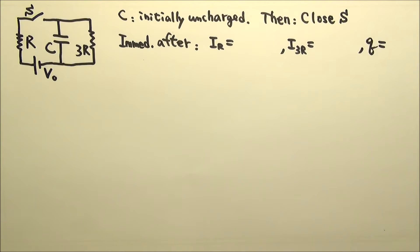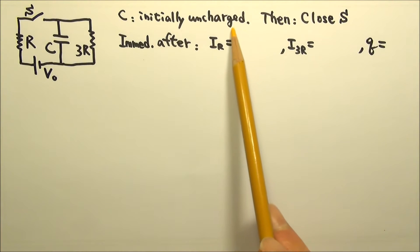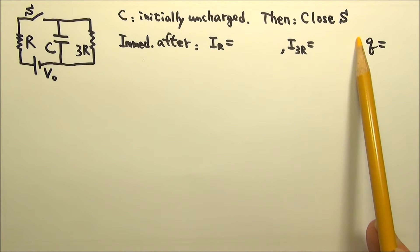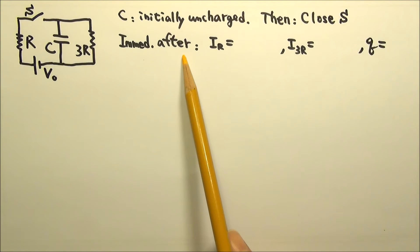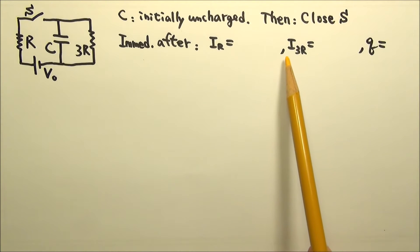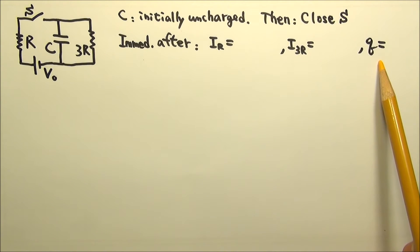In this and the next few lessons, we will go over a few more complex RC circuits. In this scenario, the capacitor is initially uncharged. We then close the switch. Immediately after S is closed, what are the current in each resistor and the charge on the capacitor?